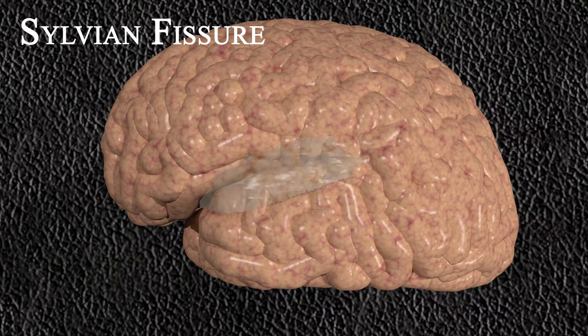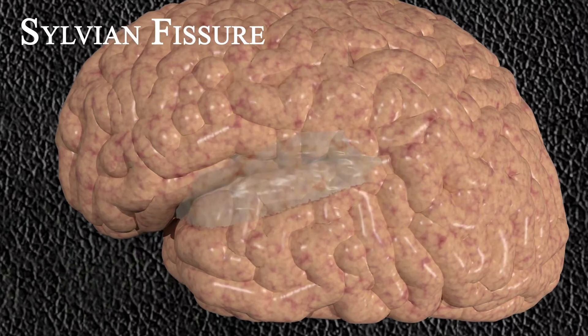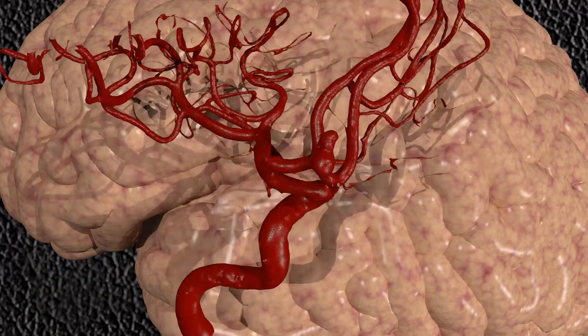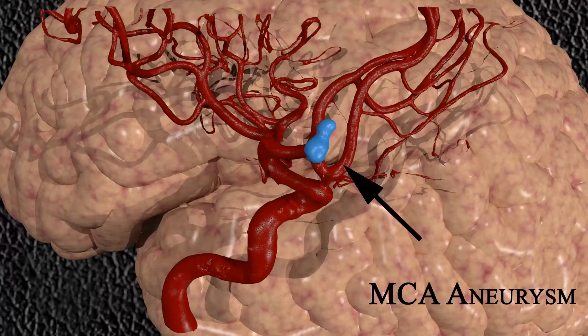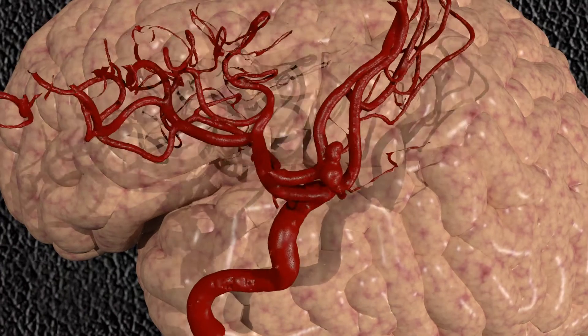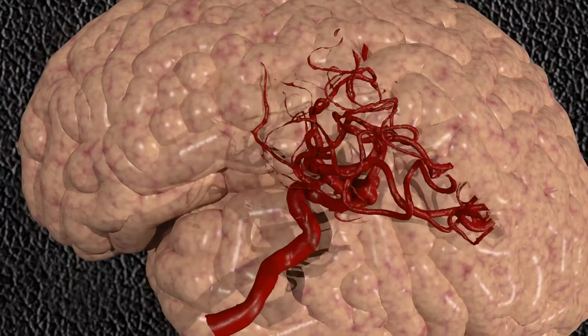Due to the fact that the middle cerebral artery courses laterally deep within the sylvian fissure, one way to surgically manage an MCA aneurysm is to dissect through the sylvian cistern, exposing the middle cerebral artery and its branches.